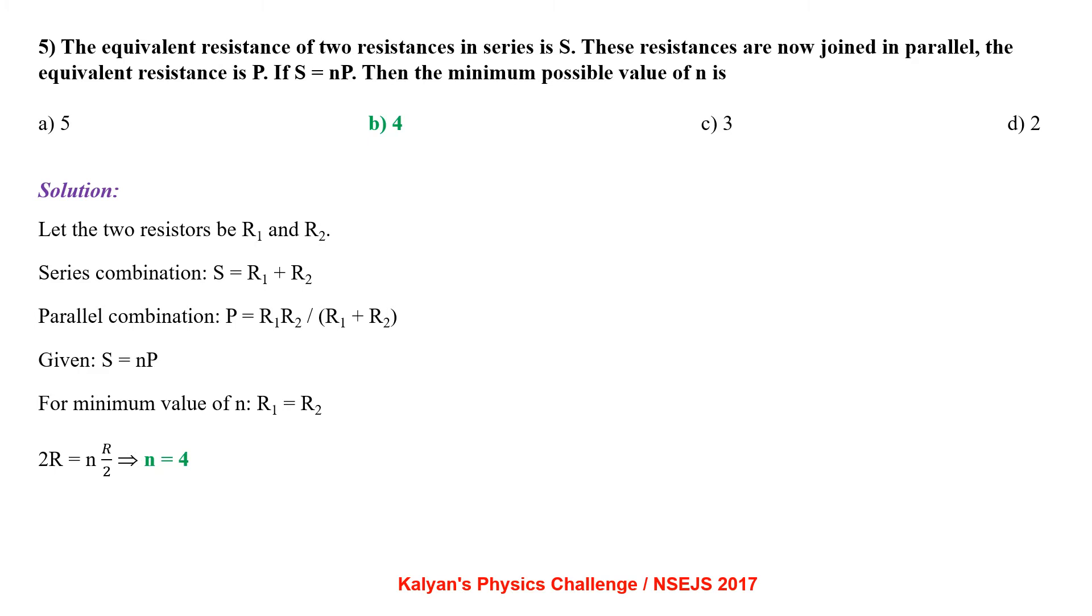Let the two resistors be R1 and R2. Series combination S equal to R1 plus R2. Parallel combination P equal to R1 R2 by R1 plus R2. Given S equal to NP, for minimum value of N, R1 should be equal to R2. So we get N equal to 4.